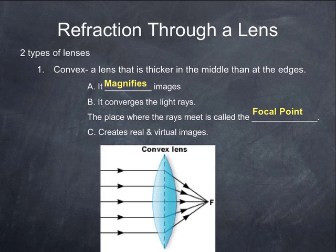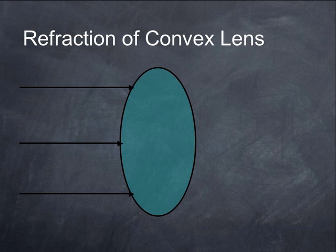Now, a convex lens, such as this, can create what we call real and virtual images. What that means is a real image can be projected onto a screen. A virtual image cannot. If we look at this diagram, I know this is sort of an oval, but it's still thicker at the edges.